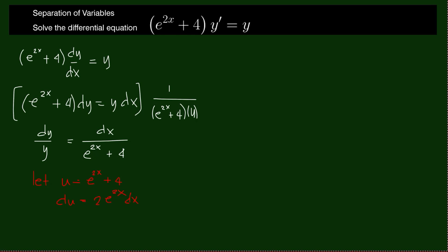From here, we can say dx is equal to du over 2 times e to the 2x. But from here, our e to the 2x will be u minus 4.